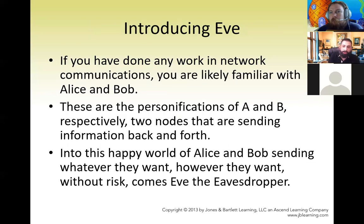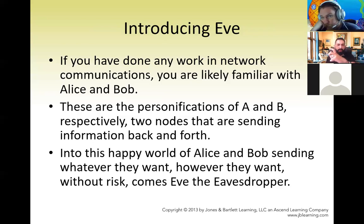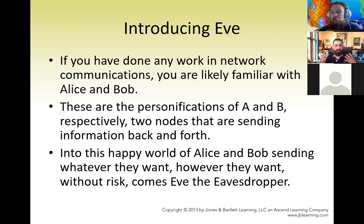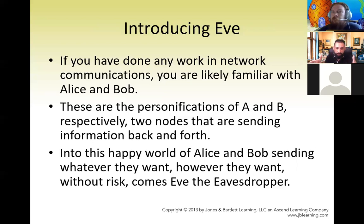If you have done any work in networking communication, you would know Alice and Bob — Alice represents A and Bob represents B. We use these to represent two nodes sending information back and forth. It's the easiest way to deliver a message — talking about networking with two or three parties in communication — because when we have more, it becomes much more complicated.